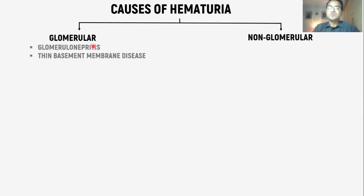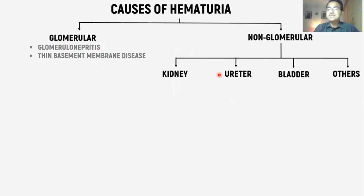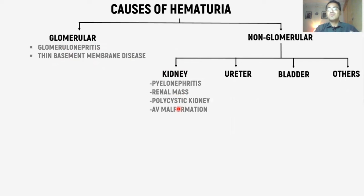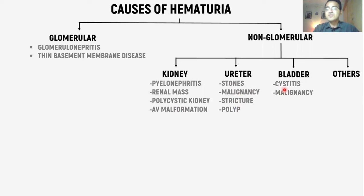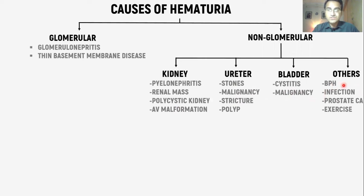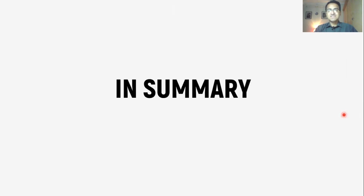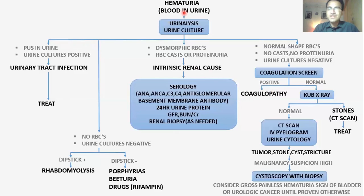Coming to the causes of hematuria, they are classified into glomerular and non-glomerular. Glomerular causes include glomerulonephritis, nephrotic syndrome, and thin basement membrane disease. Non-glomerular causes, classified by origin, include: in the kidneys — pyelonephritis, renal mass, renal tumor, polycystic kidney disease, arteriovenous malformation; in the ureters — stones, malignancy, strictures, and polyps; in the bladder — cystitis and malignancy. Other causes include BPH, infection, bladder carcinoma, and strenuous exercise.